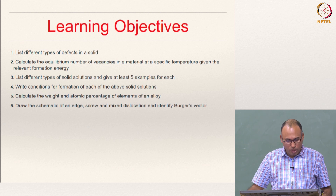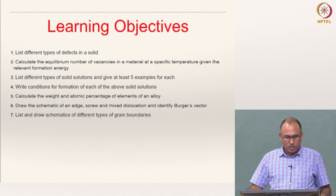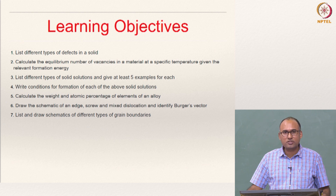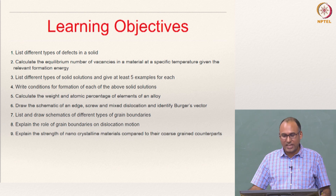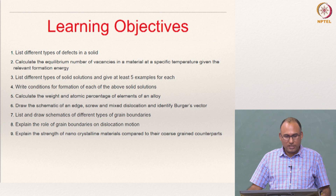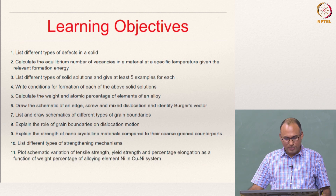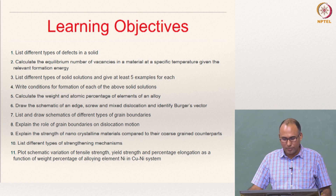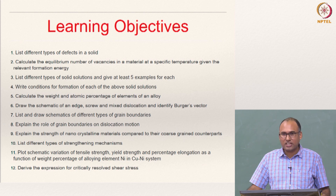You should be able to draw the schematics of edge, screw and mixed dislocations and identify the Burgers vector. List and draw schematics of different types of grain boundaries. Explain the role of grain boundaries on dislocation motion and the strength of nanocrystalline materials compared to their coarse grain counterparts. List different types of strengthening mechanisms. Plot schematic variation of tensile strength, yield strength and percentage elongation as a function of weight percentage of alloying elements in the copper-nickel system. Derive the expression for critical resolved shear stress.